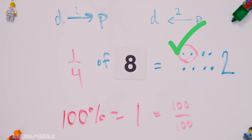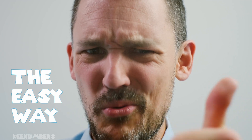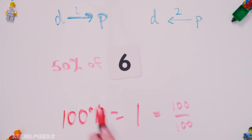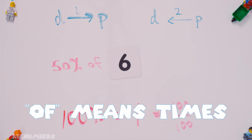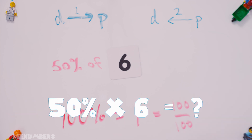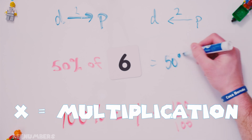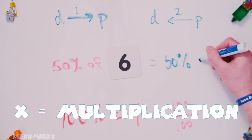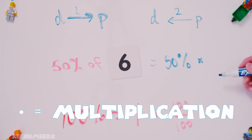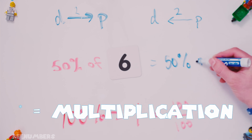Your answer is two. Let's do this the easy way. 50% of six. Now, 'of' just means times. Yep, you can bank that. 'Of' is simply another way of saying multiplication. So we are talking about 50% times six. You can put a dot, a times sign, an asterisk, parentheses — whatever you enjoy doing. It's multiplication.